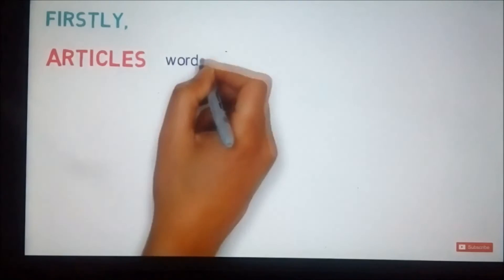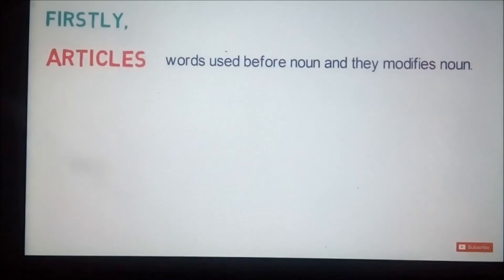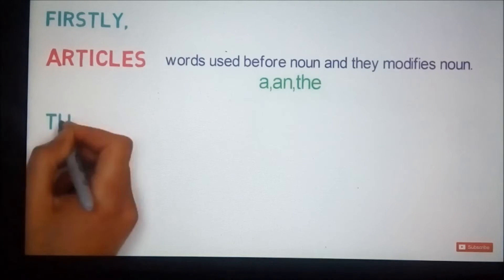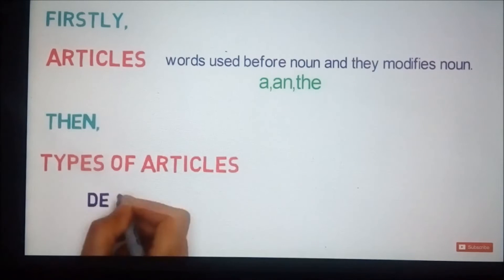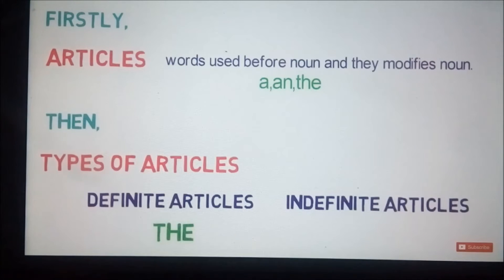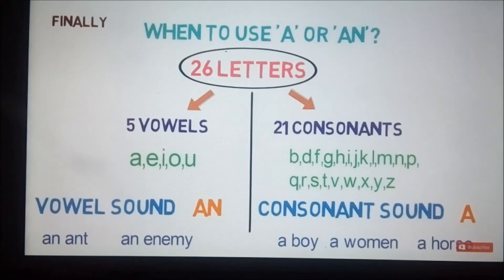That's pretty much it about articles in this video. Let's quickly revise what we learnt in this lesson. Firstly, we understood what exactly articles are. Articles are words used before nouns and they modify nouns. There are three articles in English: a, an, and the. Then we learnt the two categories in which these three articles are divided: definite articles and indefinite articles. 'The' comes in definite articles, and 'a' and 'an' come in indefinite articles. Use 'a' when a word starts with a consonant sound and 'an' when a word starts with a vowel sound. That's all about articles in this video.